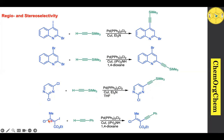For an alkene bearing both chloride and iodide substituents, iodide is more reactive so cross-coupling takes place only at the iodide position. Importantly, the stereochemistry of the alkene does not change under these reaction conditions.